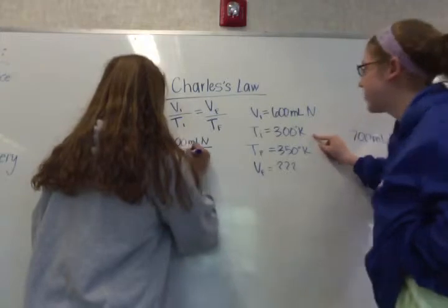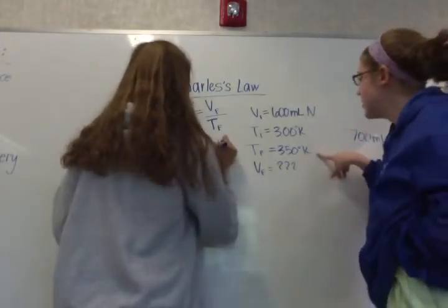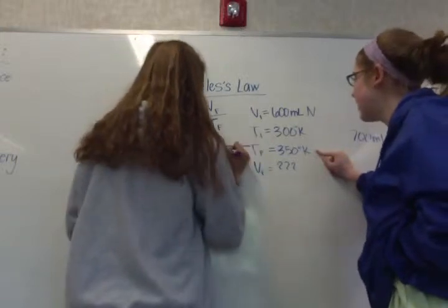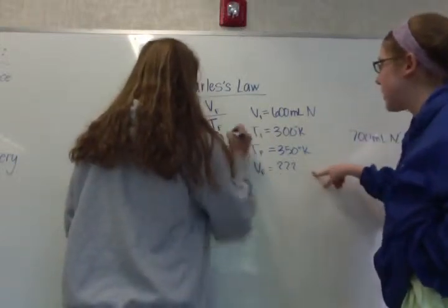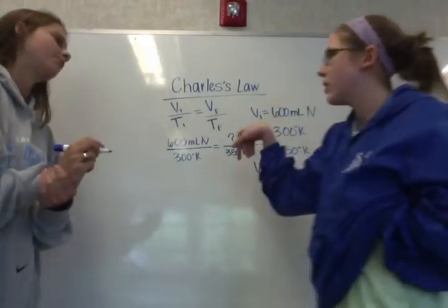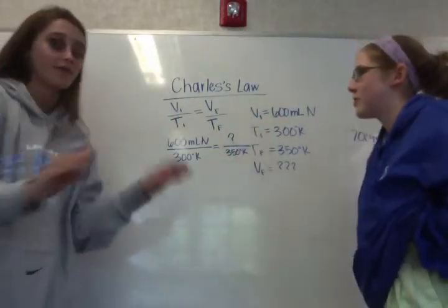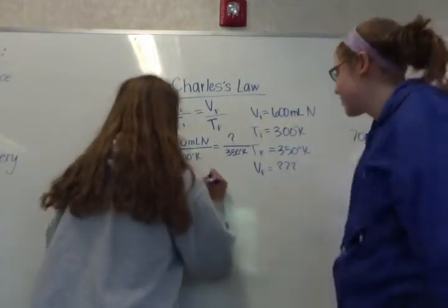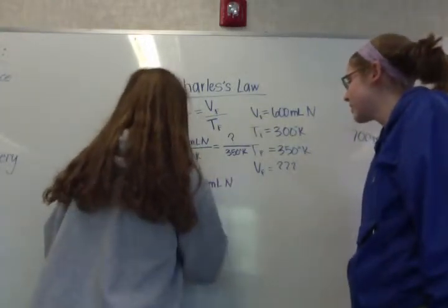then your final temperature is 350 Kelvin, and you don't know your final volume. So what will be your final volume? When you solve it and type it in on your calculator, you get 700 milliliters of nitrogen.